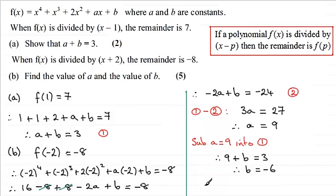So I've got my two values, a and b, I'm just going to bring them back down here. a equals 9, and b equals minus 6, just to finish the question off. Okay?